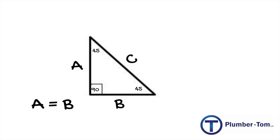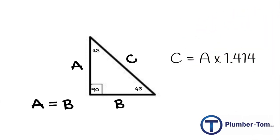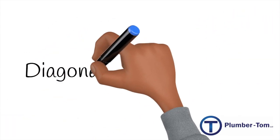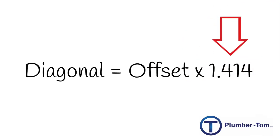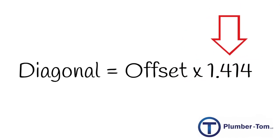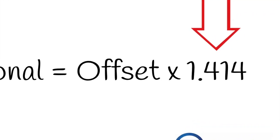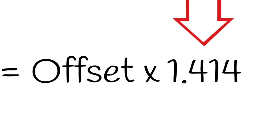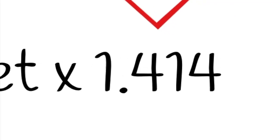Most often, we are calculating for the diagonal, which is C, because that's where the pipe will run. To calculate C, we must simply multiply the offset by our magical plumber number, 1.414. If you are a plumber, if you intend to be a plumber, this is a number that must be burned into your mind and memory forever. 1.414.